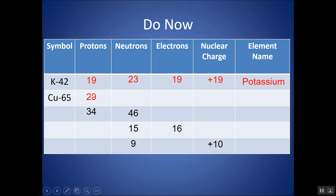For Cu-65: copper has 29 protons from the atomic number. Mass number 65 minus 29 protons gives 36 neutrons. Electrons equal 29, nuclear charge is plus 29 — this is copper. For selenium with 34 protons and 46 neutrons: I can identify the element from the protons, and adding protons and neutrons gives mass number 80. That 80 is not looked up in the periodic table — you get it by adding protons and neutrons. Electrons are 34, nuclear charge is 34, and this is selenium.